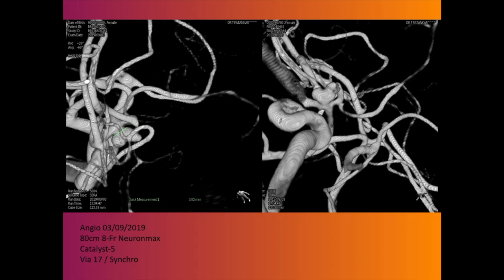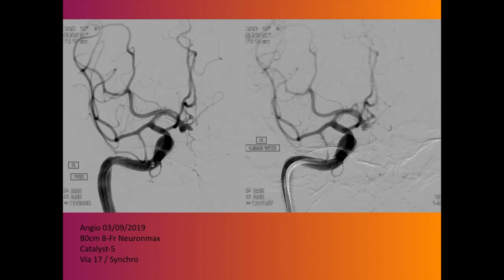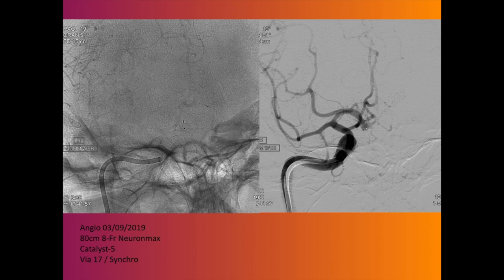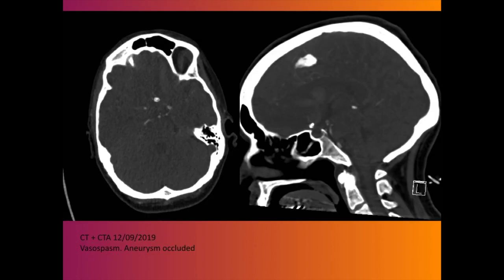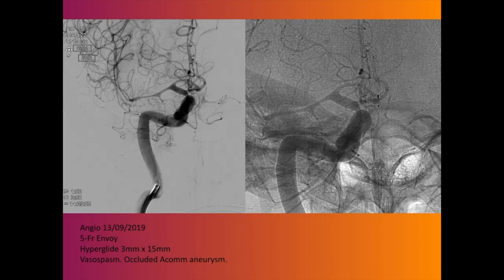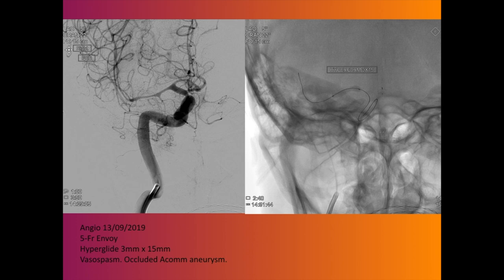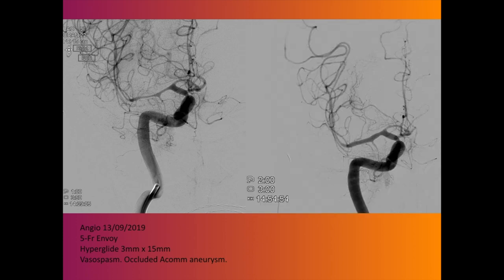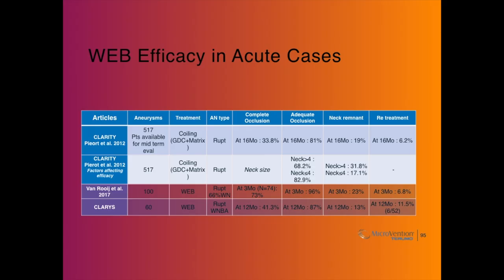This lady later developed vasospasm and was brought in for angioplasty — the aneurysm was still occluded. You can see the angioplasty performed and the continued occlusion of the aneurysm. So WEB is very effective; complete occlusion rates are around 33 percent but adequate occlusion remains around 80 percent.